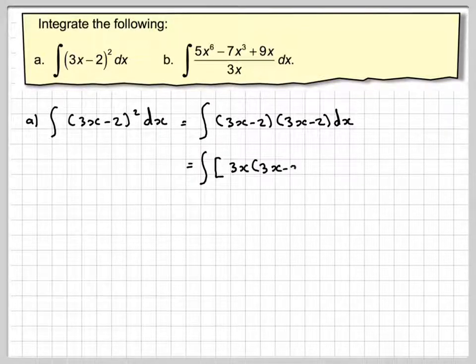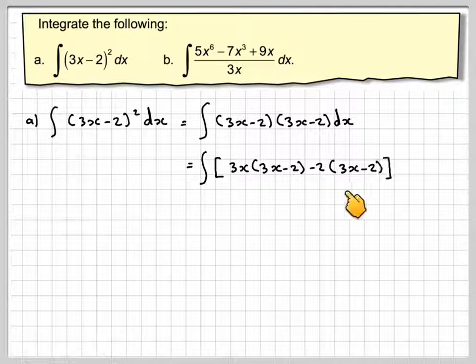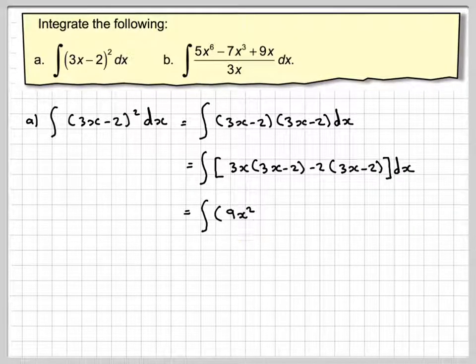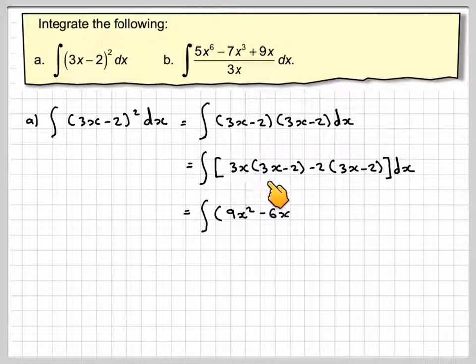So expanding the brackets, it's 3x times (3x - 2) minus 2 times (3x - 2) dx. It becomes the integral of 9x² minus 6x, 3x times 3x, 3x times -2, minus 2 times 3x which is -6x, minus 2 times -2 which is +4 dx.